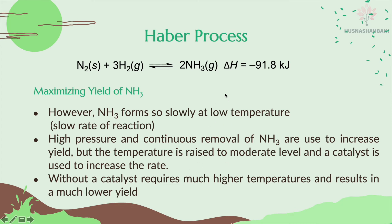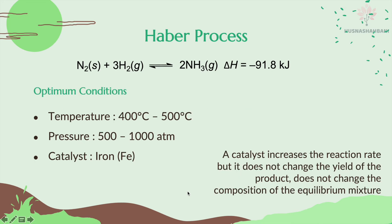Without a catalyst, this reaction requires much higher temperatures and results in a much lower yield. The optimum conditions for the Haber process are: temperature between 400 to 500 degrees Celsius, pressure 500 to 1000 atmospheres, and iron as the catalyst. The catalyst increases the rate of reaction, but it does not change the yield or the composition of the equilibrium mixture.